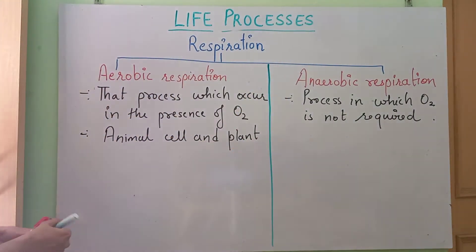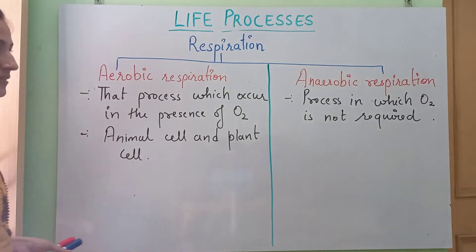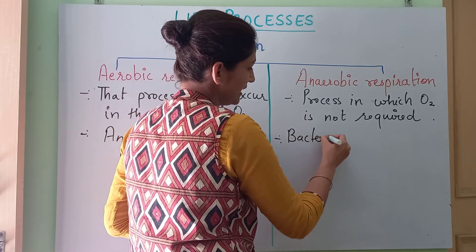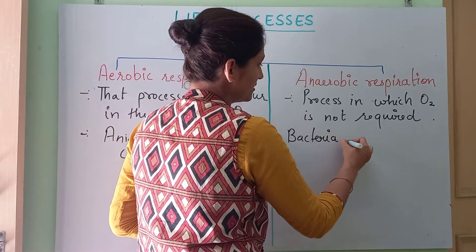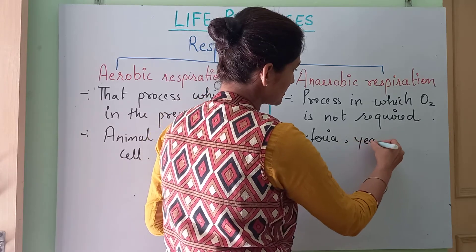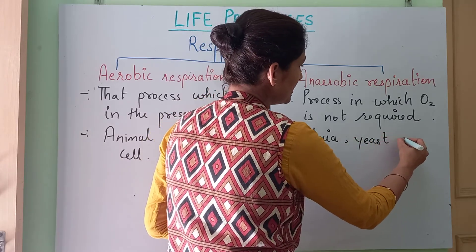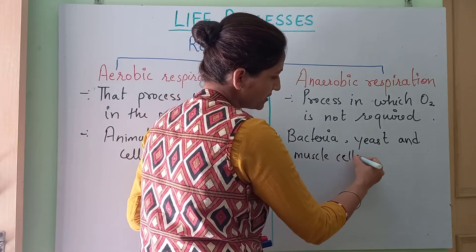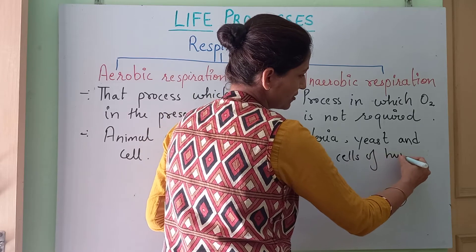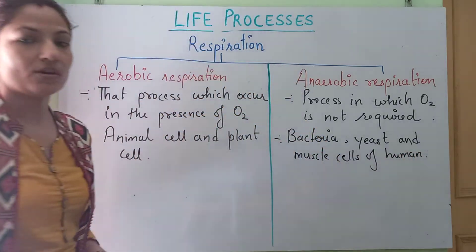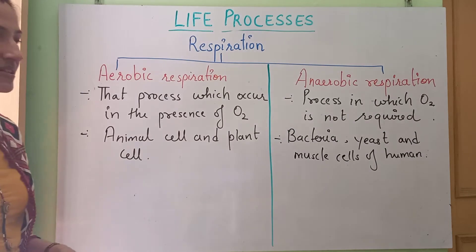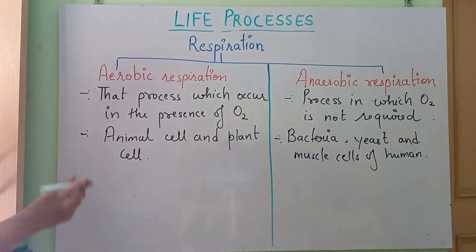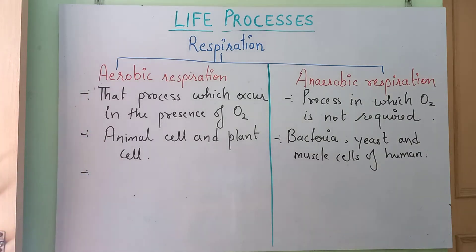Anaerobic respiration takes place in yeast. It can also take place in muscle cells of humans when there is no or less availability of oxygen to the muscle cells — then they respire anaerobically.